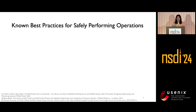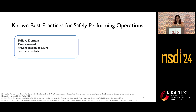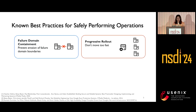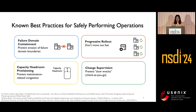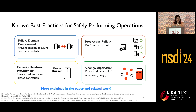There are many known best practices in the community for safely performing operations, including: clearly defining failure domain boundaries and enforcing those boundaries; rolling out changes slowly, one at a time; maintaining actual spare capacity to handle potential physical failures or maintenance congestion; and continuously monitoring the network. Although we roll out changes slowly, things can really go wrong without you noticing, so you need to continuously monitor it.